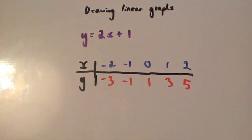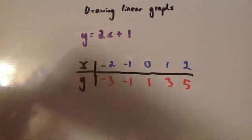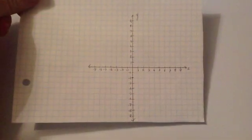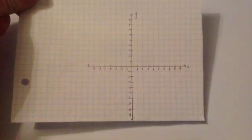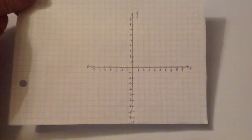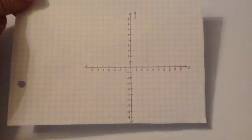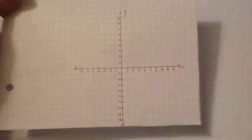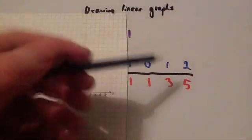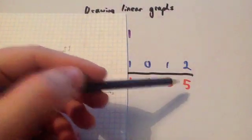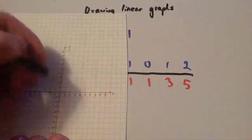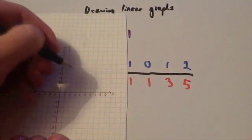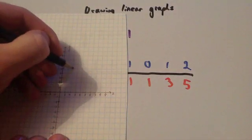Draw yourself a nice coordinate axis. You can see I've done my x and y axes and labelled them. We're going to plot the points on here. So the first coordinate is 2 across, 5 up — you go 2 across, 5 up, and you plot that point.